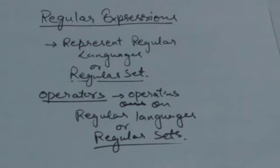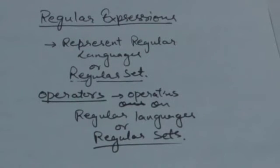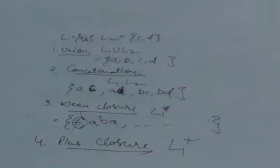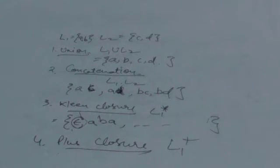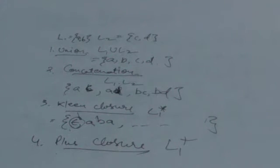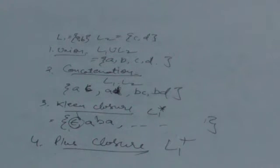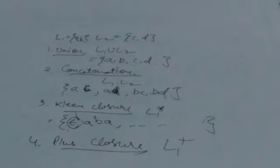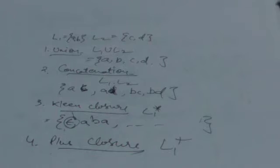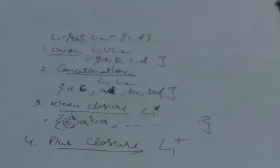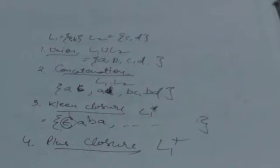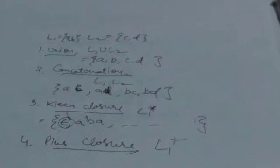The first operation is union. Suppose we have two regular languages L1 and L2. L1 has two strings a and b; L2 has two strings c and d. Then the union of L1 and L2 is a set containing all the strings of set L1 and all the strings of set L2.